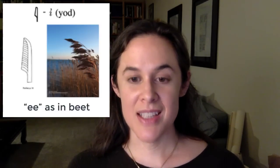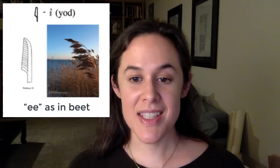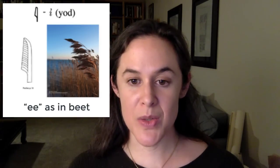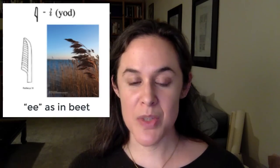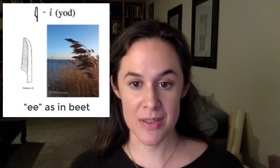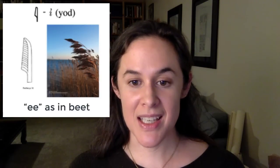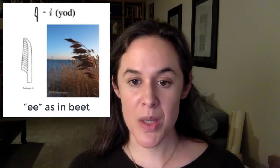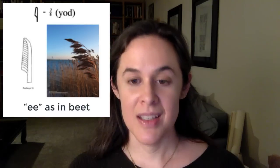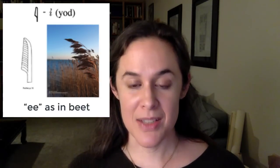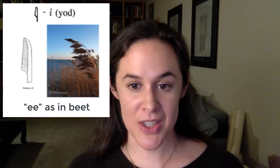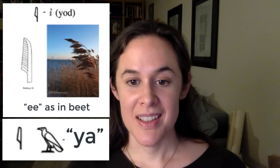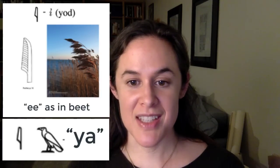The next sign in the list of single-consonant hieroglyphs is called Yod. It's a leaf of the kind of reeds that line the banks of the Nile. This is another one of those signs that we usually pronounce as a vowel, even though it was originally probably a semi-vowel. We say 'ee' as in 'beat,' even though it was more like a Y sound. If it's followed by an aleph — reed leaf, then vulture — we pronounce it as a Y. Reed leaf plus vulture gives us the sound 'ya.'